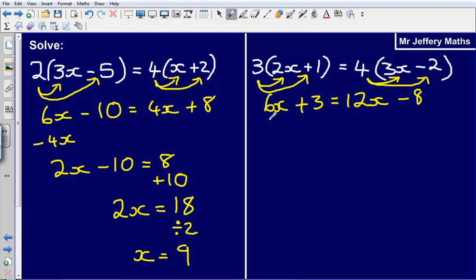So now I'm just going to subtract the smallest x which in this case is that 6x there. So that leaves me with 3 is equal to 12x minus 6x which is just 6x minus 8.